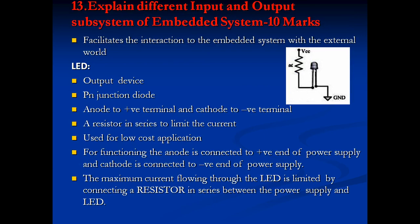Next question: explain the different input and output subsystems of an embedded system, asked for 10 marks. Starting with LED — it is an output device used to indicate status in two states: on and off. It has a PN junction diode with the anode connected to the positive terminal and cathode to the negative terminal. A resistor in series limits the current; it is used in low-cost applications.